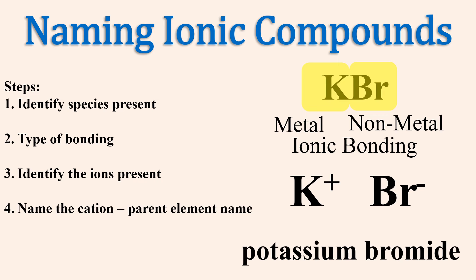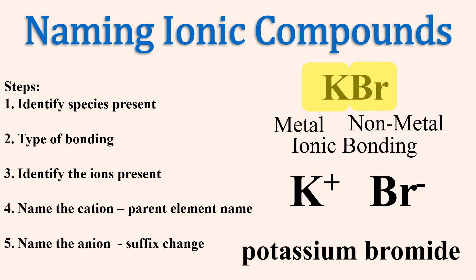Name the cation with its elemental name first: potassium. Then, name the anion second. The rule for monatomic anions is to change their elemental name suffix — here, bromine is changed to bromide. The name is potassium bromide.